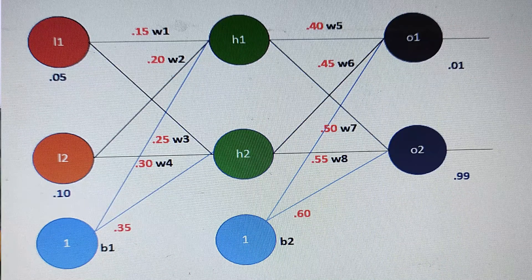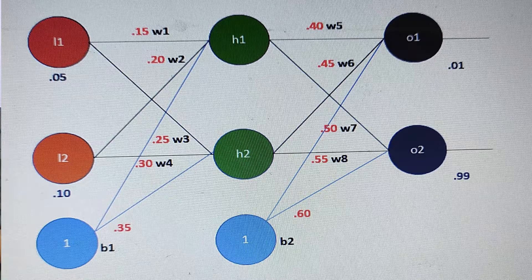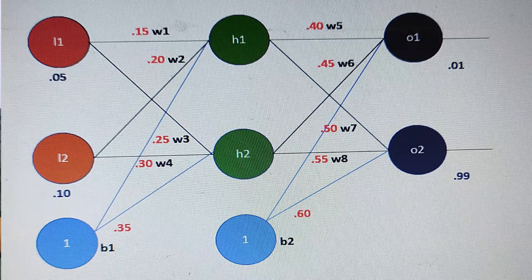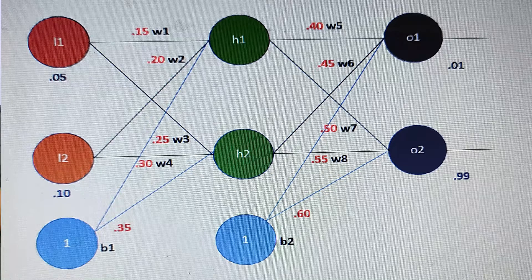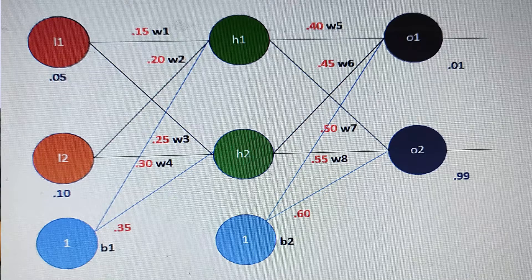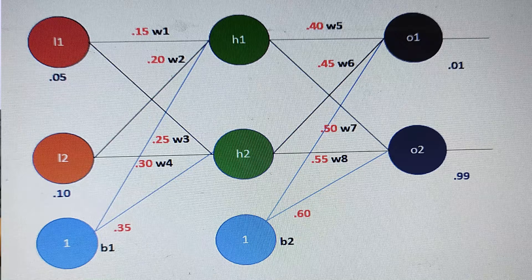To understand the internal mathematics, we need a neural network in place. As you can see on the screen, I have a very simple neural network. We have an input layer represented by L1 and L2 nodes, H1 and H2 are part of the hidden layer, and O1 and O2 are parts of the output layer. So we have one input layer, one hidden layer, one output layer, with two nodes in each layer.